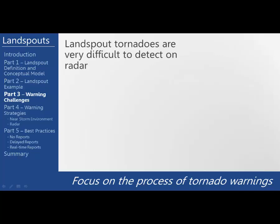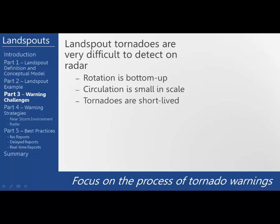Landspout tornadoes are very difficult to detect on radar. Rotation is bottom-up since it originates from the vorticity in the low levels of the boundary layer. The circulation is small in scale, which means the 88D is unable to resolve the vortex. The tornadoes are usually short-lived with life spans of five minutes or less. Radar often overshoots a landspout and even if you were very close to the radar, you would likely not be seeing a landspout. They typically occur with a towering cumulus when the precipitation process is still in its infancy, which is why there is very little radar presentation and seeing the rotation very rarely happens.